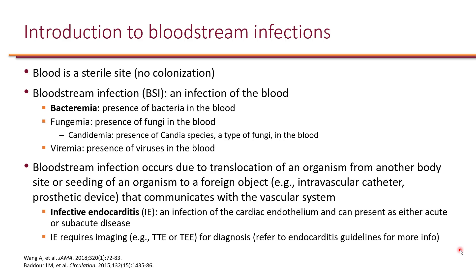Because there are different types of fungi, and candida are the most common type, there is also candidemia, which refers to the presence of candida species in the blood. Because blood is a sterile site, bacteremia is always the result of translocation of bacteria from somewhere else.